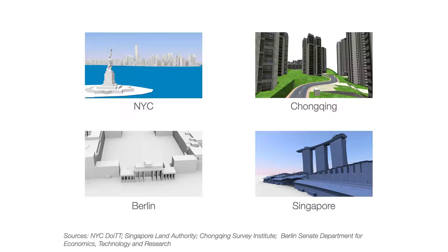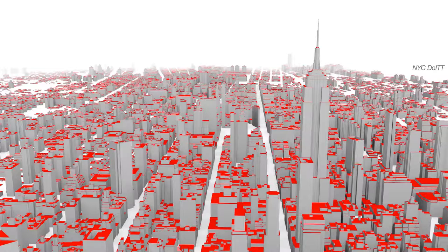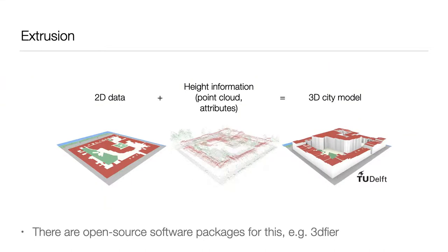Today, there are dozens of cities that have a 3D city model, and many of them release them as open data. One of my favorites is the dataset by New York City, which has more than a million buildings modeled in 3D, released as open data. There are many ways to produce 3D city models — like from photogrammetric surveys or converting from architectural models — but the most common method is extrusion: taking existing 2D datasets such as topographic maps and extruding buildings to their heights. Heights are obtained from LiDAR point clouds or as an attribute stored in the building data, resulting in so-called block models or LOD1 models with flat rooftops.